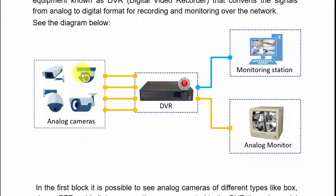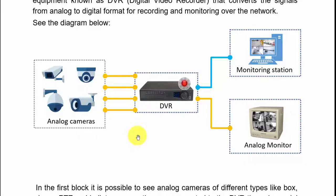Here I have a diagram showing different camera types: a box camera, a dome camera, a PTZ camera, and a bullet camera — all analog cameras. There's more information about camera formats in the guide linked in the description. Basically, analog cameras connect to a DVR using coaxial cables, one cable per camera.